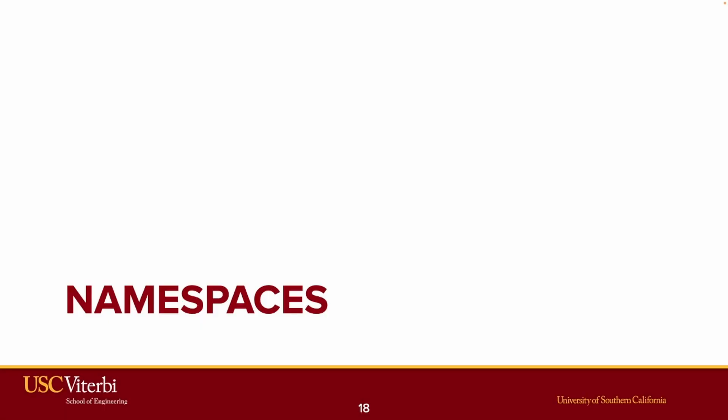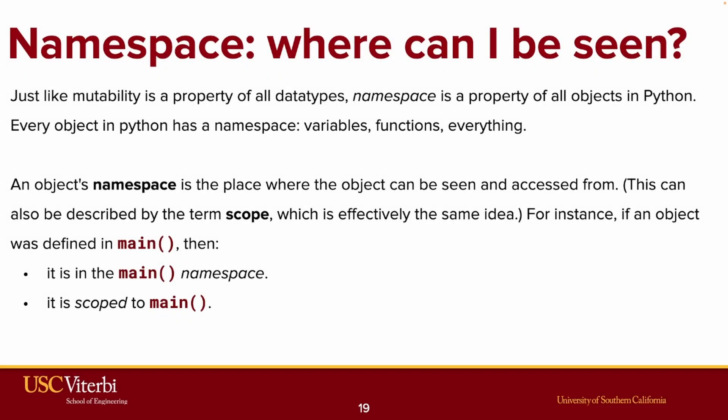Now that you've learned about how to actually write functions, it's a good time to talk about namespace. Just like mutability is a property of all data types, namespace is a property of all objects in Python. So every object in Python has a namespace. Variables, functions, everything has a namespace. And an object's namespace is the place where the object can be seen and accessed from. For what it's worth, this can also be described by the term scope, which is effectively the same idea.